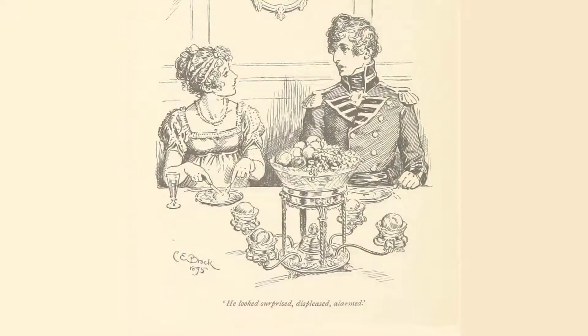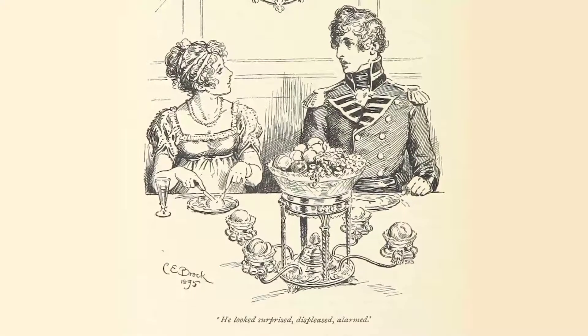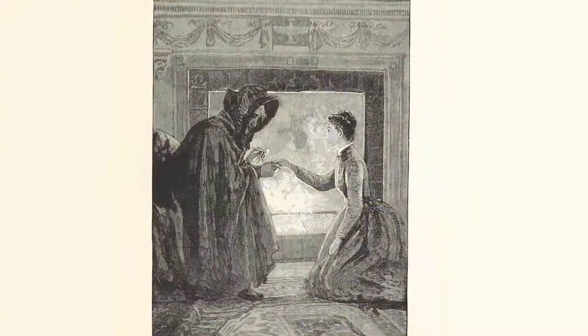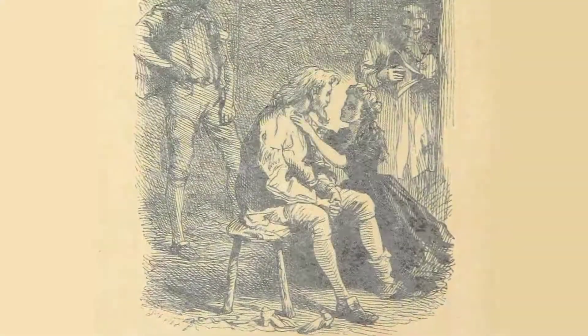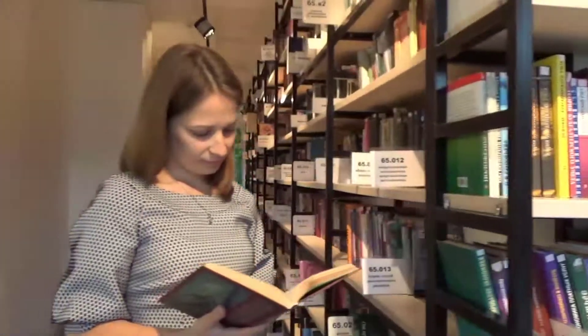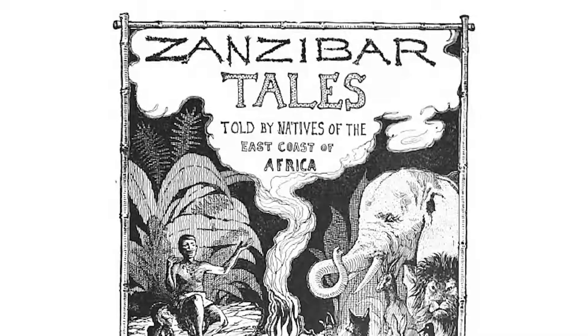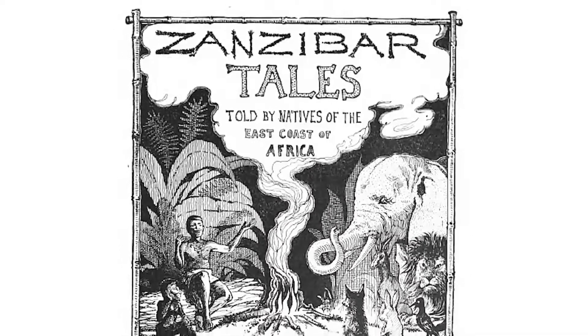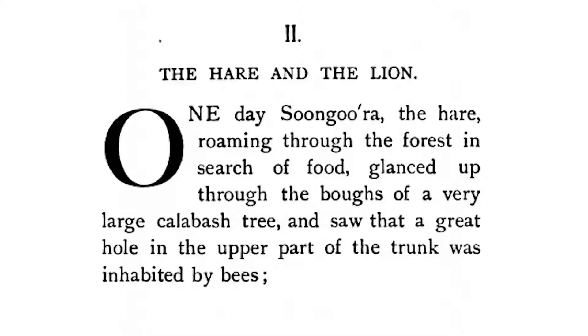Many of us fell in love with stories when we were young. They started off "once upon a time" and after a harrowing adventure they ended with "and they lived happily ever after." We've studied stories from around the world and the beginnings and endings are similar. The content of the stories are different but their structures are alike. Consider a classic African tale from Zanzibar called The Hare and the Lion.